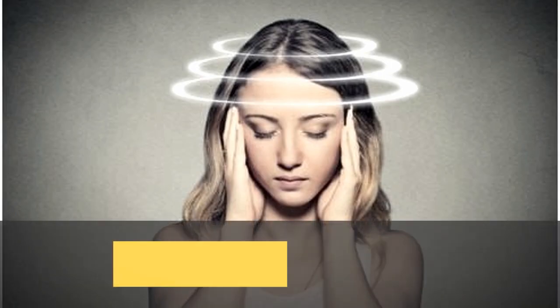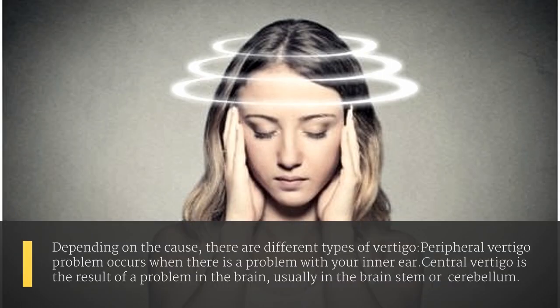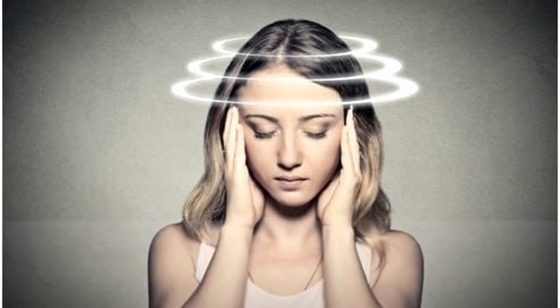Depending on the cause, there are different types of vertigo. Peripheral vertigo occurs when there is a problem with your inner ear. Central vertigo is the result of a problem in the brain, usually in the brain stem or cerebellum.